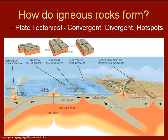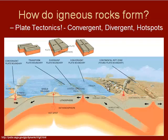How do these rocks form? They're related to plate tectonics. We have areas where two plates are colliding at convergent zones where a plate is subducted to create magma. Divergent areas where two plates pull apart and magma is created. And then hotspots where we have volcanic activity as well.